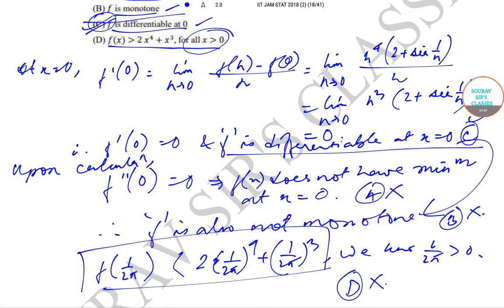Today we have solved question number 34 from the IIT JAM mathematical statistics question paper of year 2018. We will be solving the next questions in the subsequent videos. Till then keep watching Sorops classes videos for more solutions and content. Thank you very much.